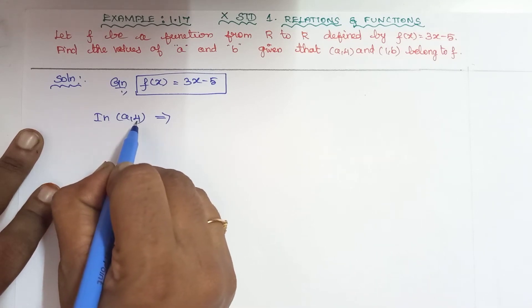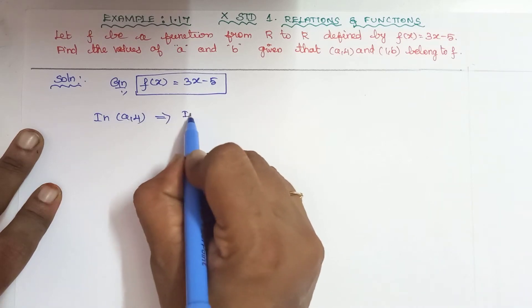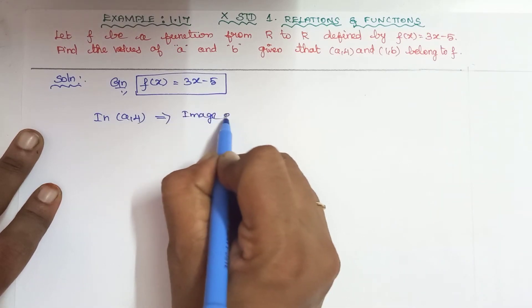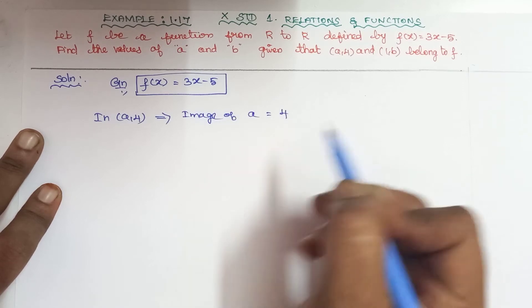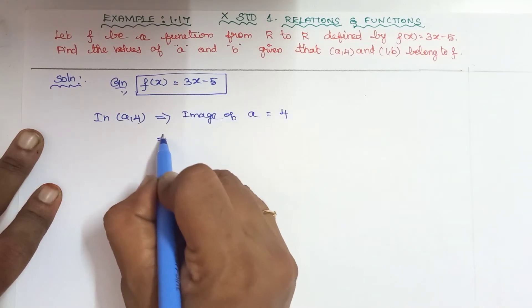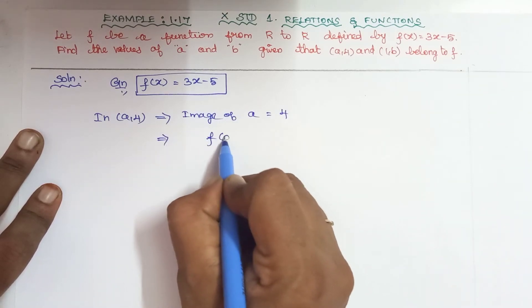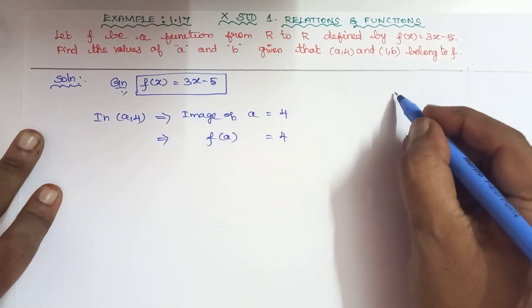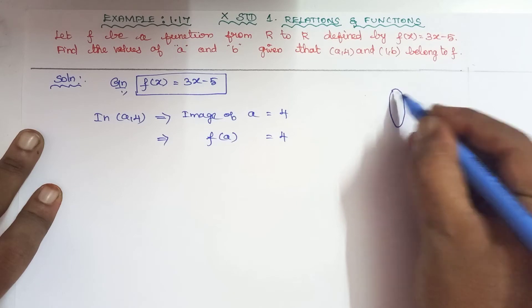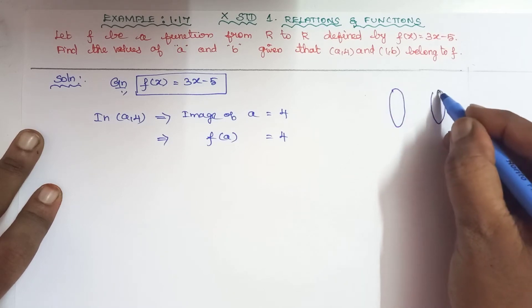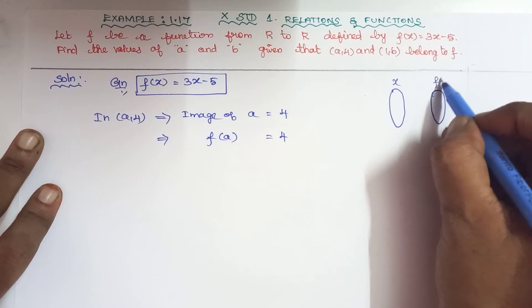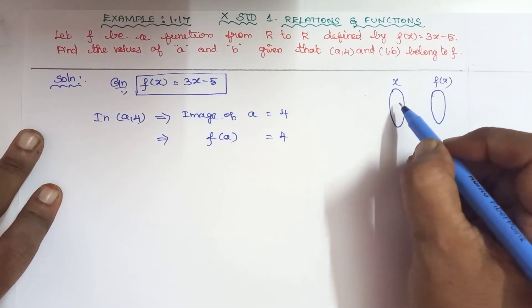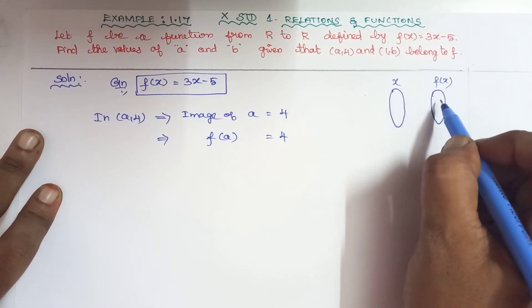The image of a is equal to 4. We can write f(a) = 4. In the relation f(x) = 3x - 5, x is replaced by a.